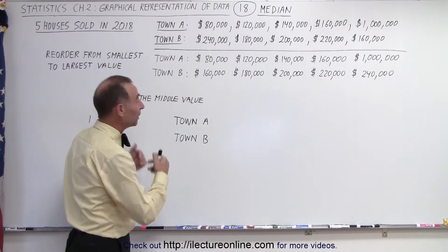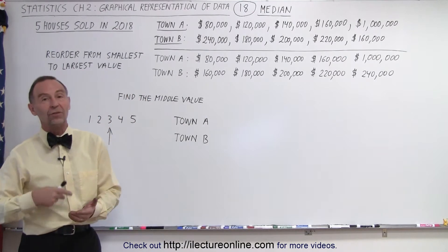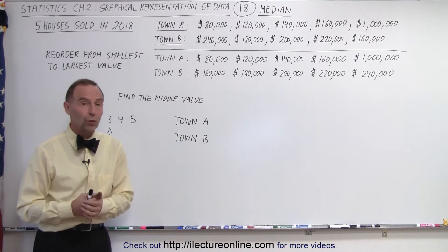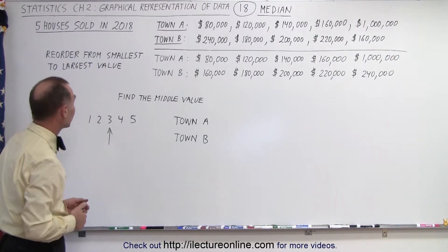Again we're going to use the same data sets, the two towns, town A and town B, where five houses were sold in each in the previous year of 2018.